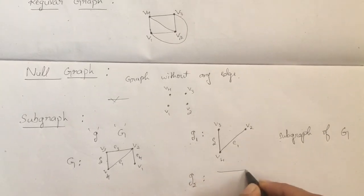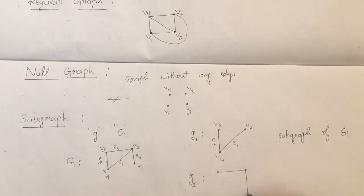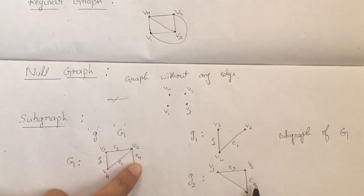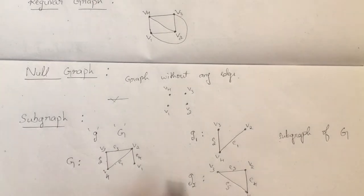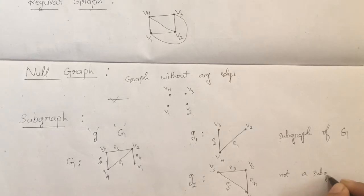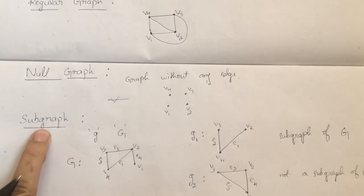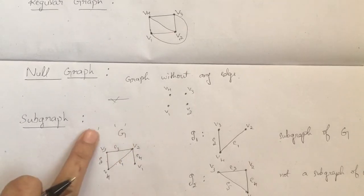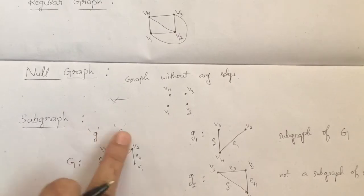If I draw one more graph with edges e3, e4, and an extra edge e5 which is not in G, then this graph is not a subgraph of the main graph G. A graph G' is a subgraph of G only if all the vertices and edges of G' are present in G.